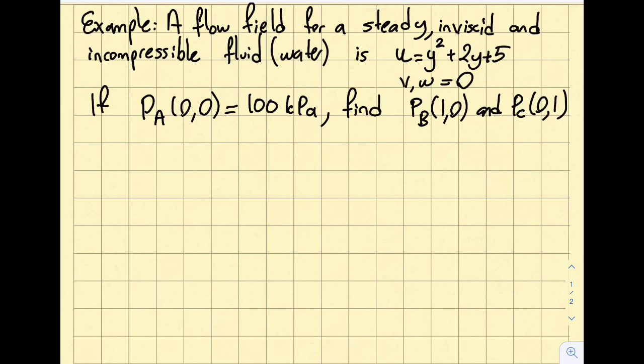I'm going to solve an example to find pressure at different points when a pressure value is known at a particular point in a flow field. The example reads, a flow field for a steady, inviscid, and incompressible fluid, and this time around it's given as water, is u equals y squared plus 2y plus 5, and v and w are 0.